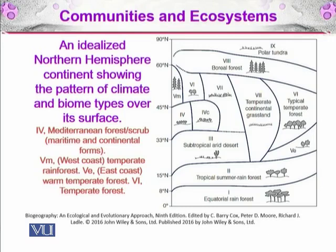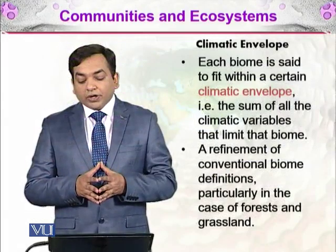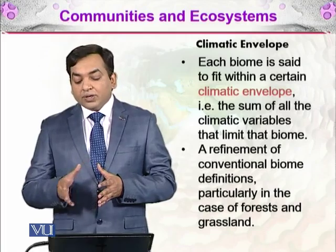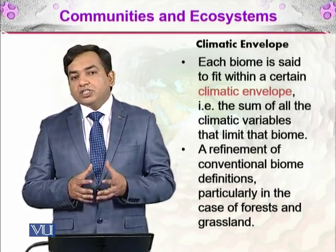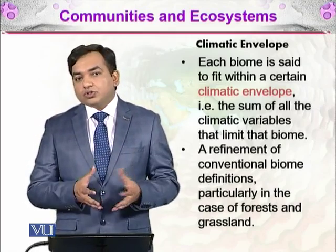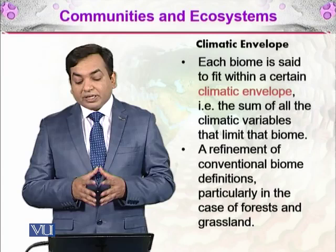Going further north, you would see the boreal forest, and in the very far north you will see the polar tundra. This is an idealized northern hemisphere — of course, it is generalized and not perfectly accurate, but it tells you that as you go from the equator to the polar regions, there are different regions with different sorts of plants and different climates. Each biome is said to fit within a certain climatic envelope.